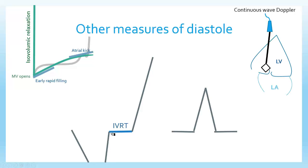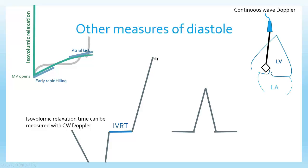If I throw a continuous wave Doppler just off to the side of the mitral valve, I'll pick up both signals: systolic flow away from the probe, and inflow velocities toward the probe. The first measure of interest is isovolumic relaxation time (IVRT). I can measure that with continuous wave Doppler — it's the space between when the LVOT signal ends and when transmitral valve blood flow starts. With early diastolic dysfunction, IVRT gets longer because the ventricle takes longer to open. However, when left atrial pressure gets really high, IVRT will ultimately shorten, because the high left atrial pressure pops the mitral valve open early.